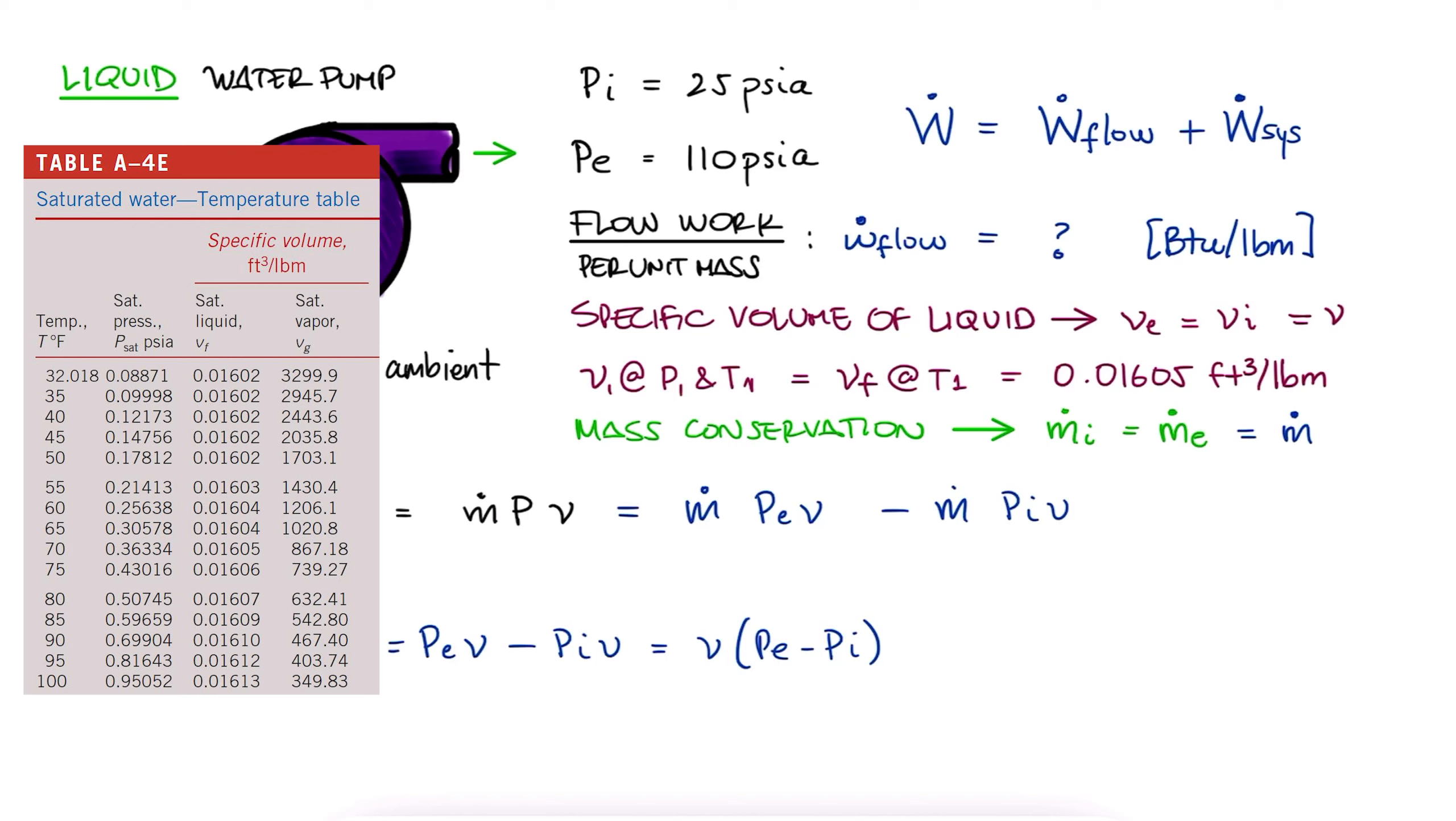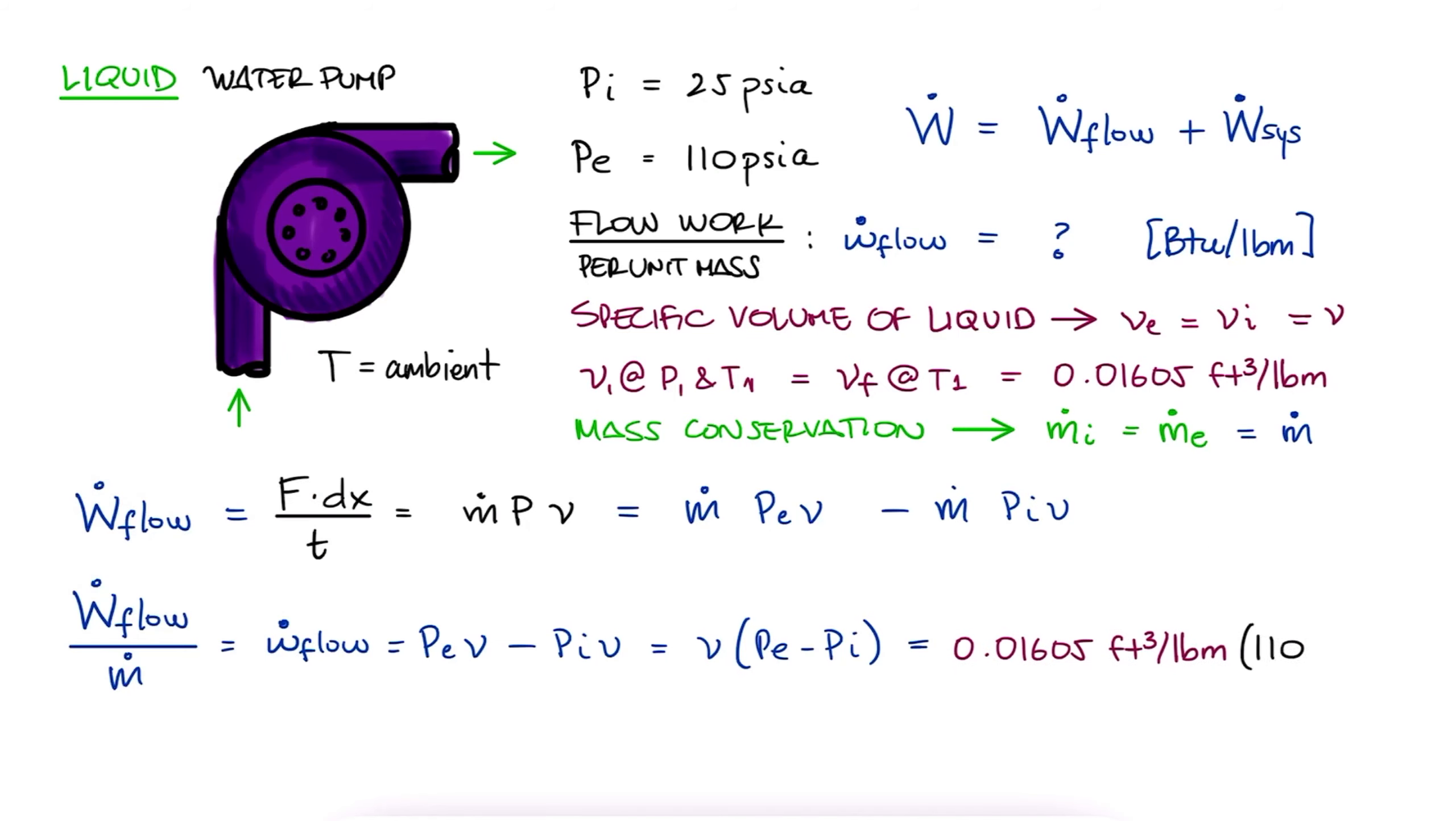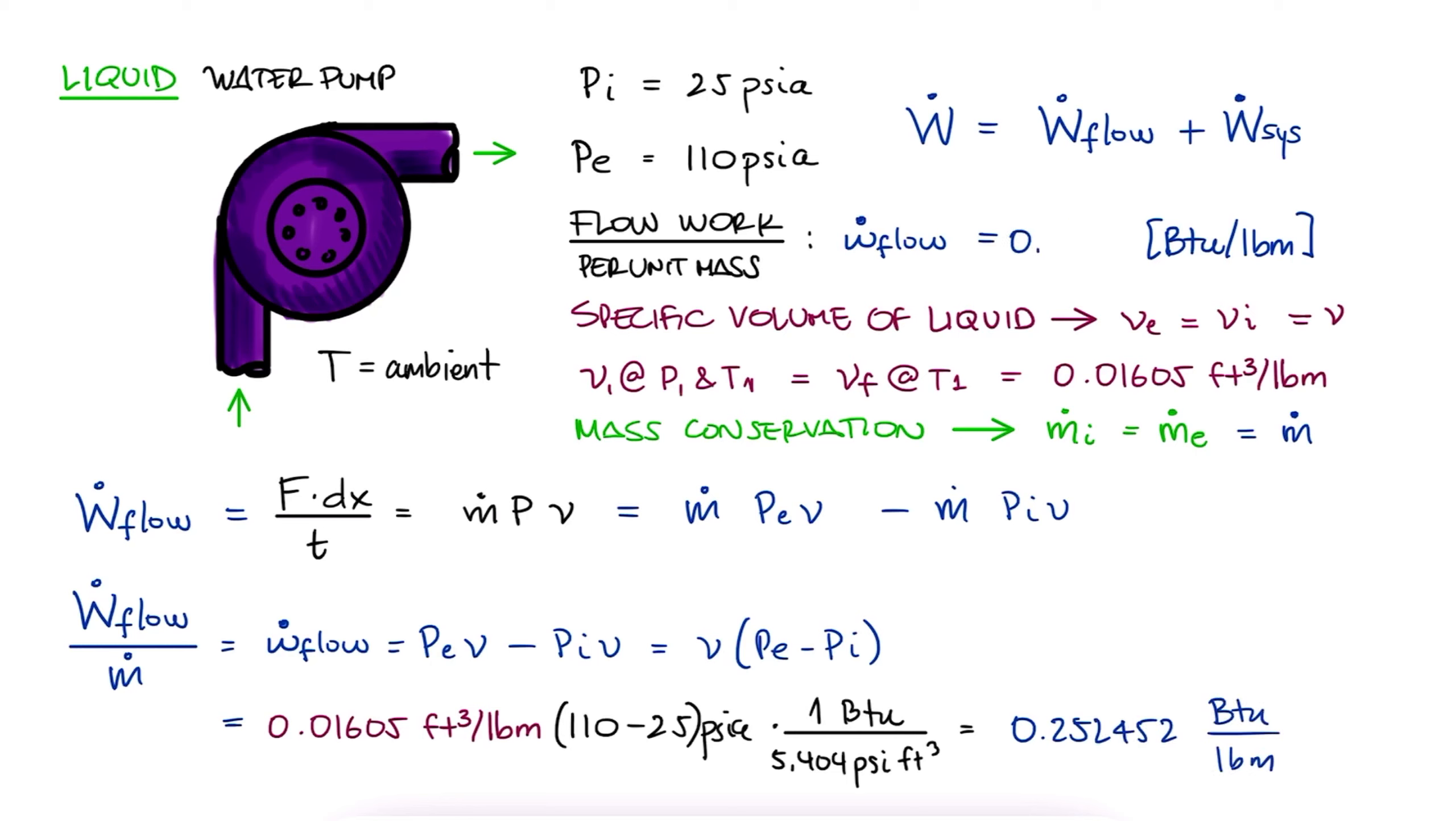You can do other temperatures, but it's not going to change much. We substitute that value and the given pressures, and we do a simple unit conversion to find that the flow work per mass is equal to 0.252 BTU per pound mass.